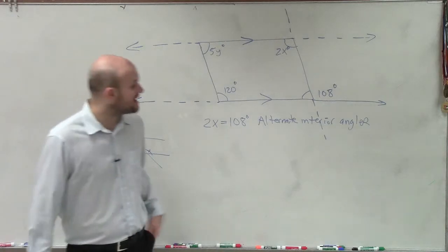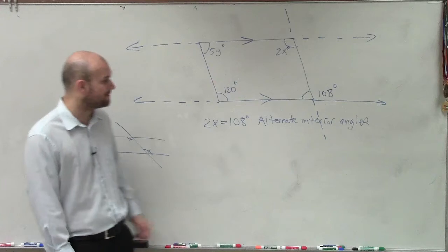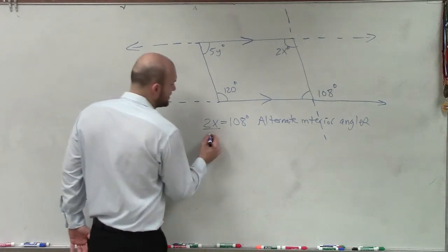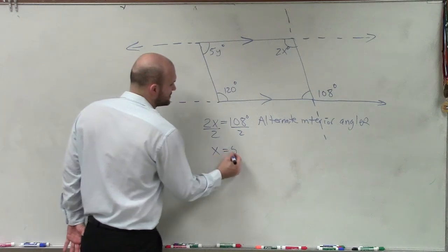So Alexander, when you write that down, write it down if you forget. If you don't remember their alternate interior angles, write that down so you can remember them. So now I'll just divide by 2, divide by 2, and now I can say x equals 54.